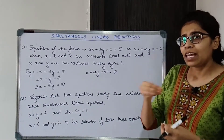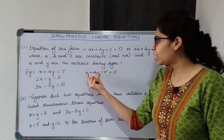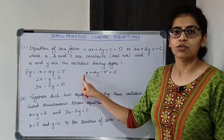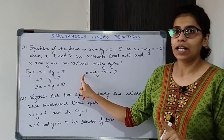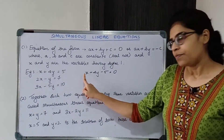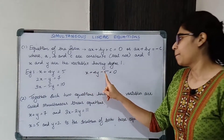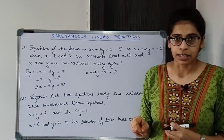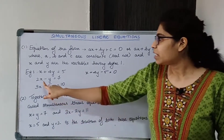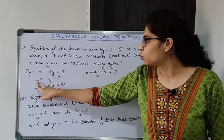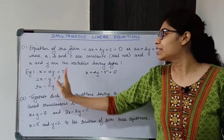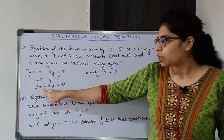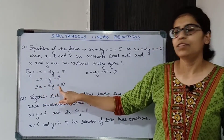What will be the values of A, B, and C? X and Y are variables. For the first example, A is 1 — since there is nothing written before X, it is 1, not 0. So A is 1, B is 4, C is minus 5 — include the negative sign if there is any. For the second one, A is 2, B is minus 1, C is minus 7. For the third one, A is 3, B is minus 5, C is minus 10.